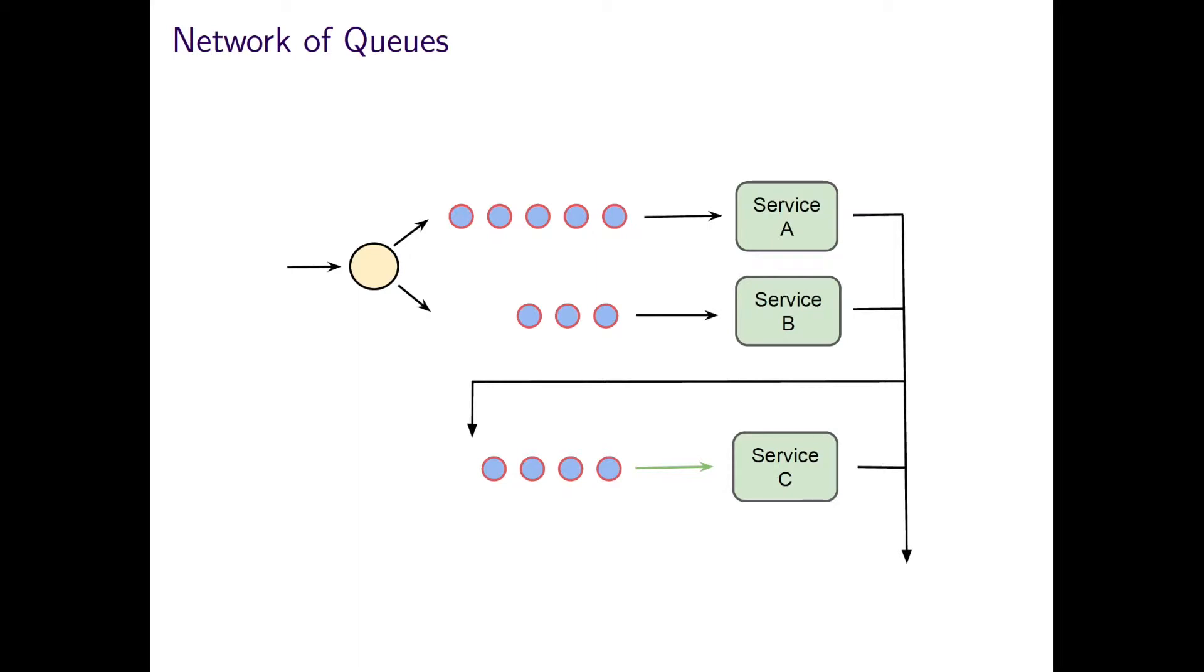Imagine this network. Patients may join either of the first two queues for service A or B. This could be based, for example, on their medical need. On completing their service, they can leave the system or may be asked to join the queue for service C. Previously, we considered only single queues, but here we have a network of queues, albeit still relatively simple.